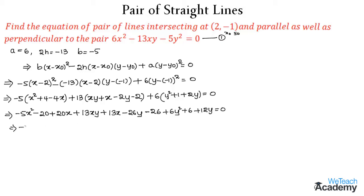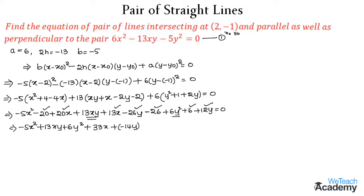So that implies: the x² term is -5x², the xy term gives +13xy, the y² term gives +6y². Grouping x terms: 20x + 13x = 33x. Grouping y terms: -26y + 12y = -14y. For the constants: -20 - 26 + 6 = -40. So the full expression equals 0.